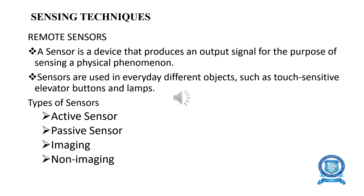The topic name is sensing technique. In remote sensing, a sensor is a device that produces an output signal for the purpose of sensing a physical phenomena. Sensors are used in everyday life in different objects such as touch sensitive elevators, buttons and lamps. There are different types of sensors.